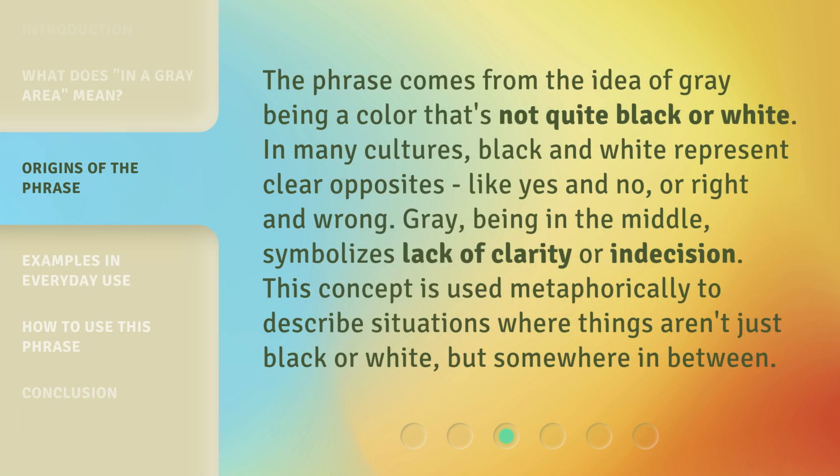The phrase comes from the idea of gray being a color that's not quite black or white. In many cultures, black and white represent clear opposites, like yes and no, or right and wrong. Gray, being in the middle, symbolizes a lack of clarity or indecision. This concept is used metaphorically to describe situations where things aren't just black or white, but somewhere in between.